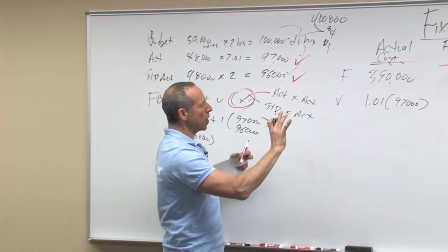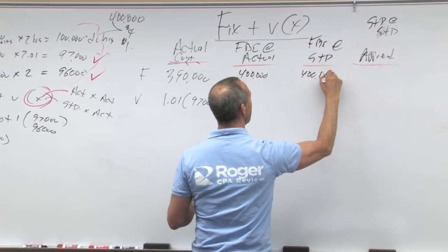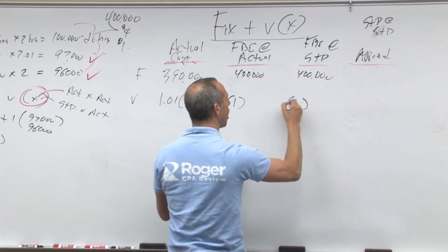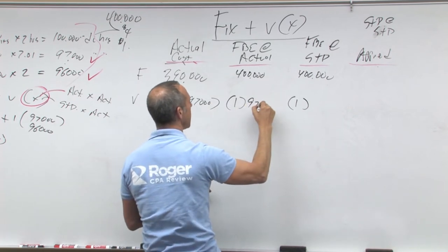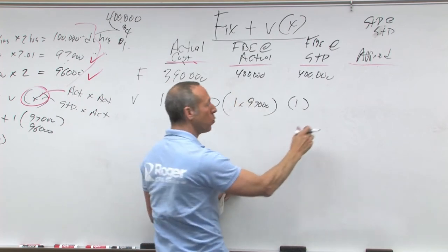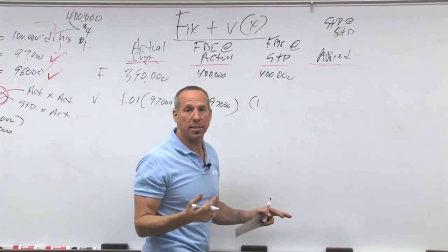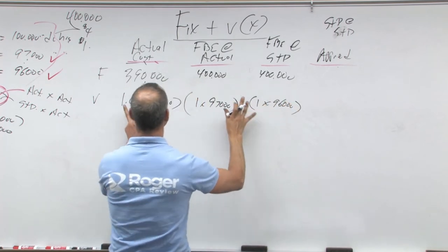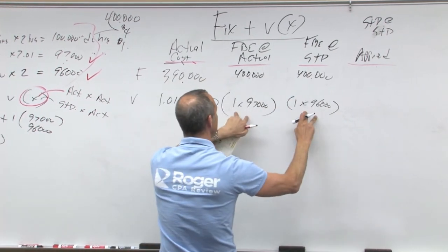Let's take this over to my chart. Within the fixed, this is still 400, this is still 400, because fixed is fixed. The variable is going to be a dollar, a dollar — but what changes is: since this column is closer to actual, it's going to be actual 97,000. And this one over here is closer to applied — we would have applied standard allowed based on actual, which is 96,000. So you can already see these numbers are different; these two are the same, these two are different, these two are different.